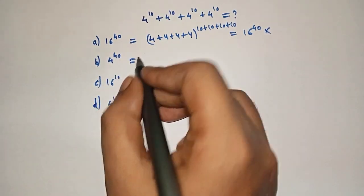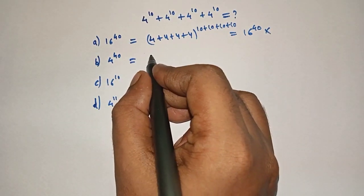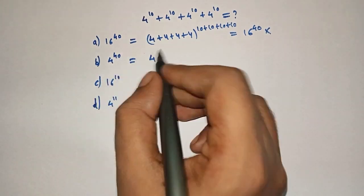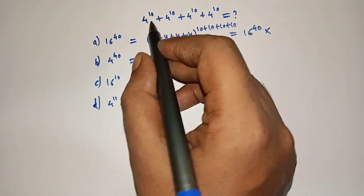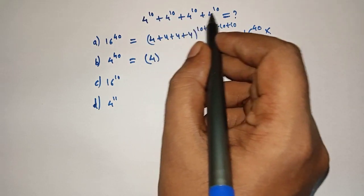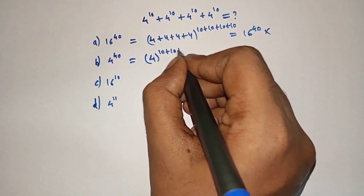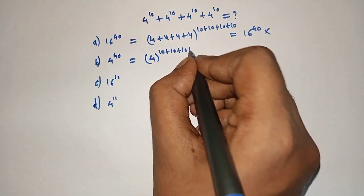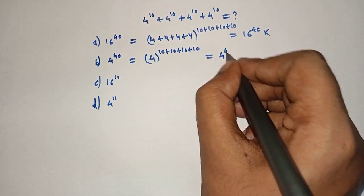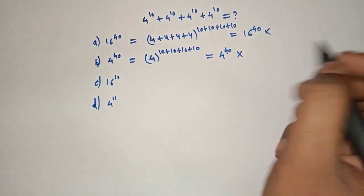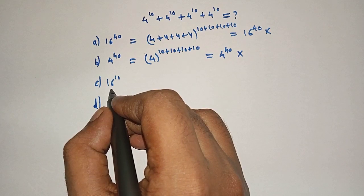Let's check 4 raised to 40. Here, 4 can be written as 4, and 40 can be written as the sum of their powers: 10 plus 10 plus 10 plus 10, which gives 4 raised to 40. This is also not the right answer.